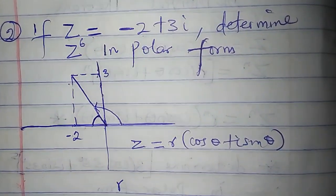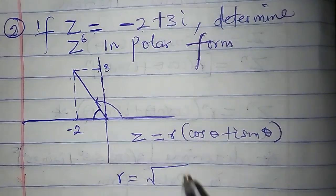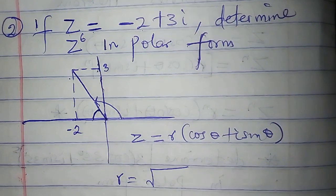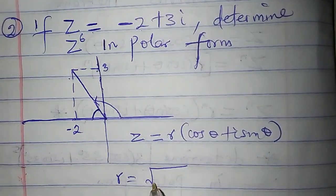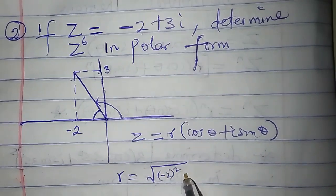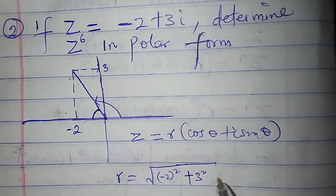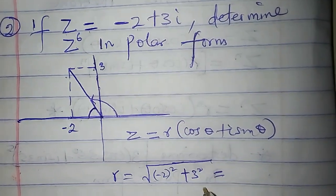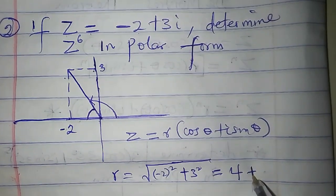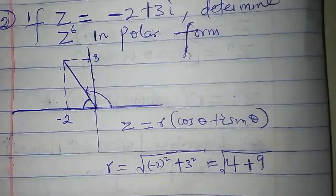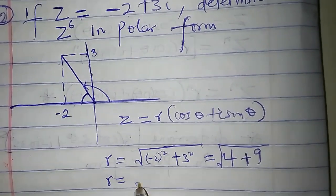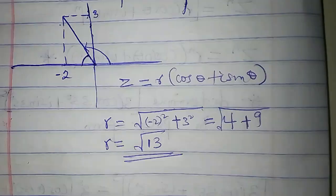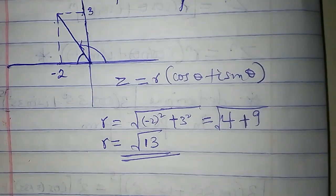The modulus is the positive square root of a squared plus b squared. a is minus 2, b is 3. That's minus 2 squared plus 3 squared is 4, 3 squared is 9, 4 plus 9 is 13. So the modulus is the square root of 13. We may not need to break it down to obtain a decimal.